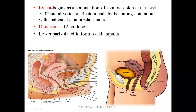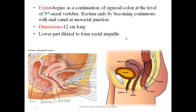This is also the same female pelvis. If it is a male, then the uterus and the vagina would be absent. Instead, the anterior structure related to the rectum would be the urinary bladder in males. So that is one difference.